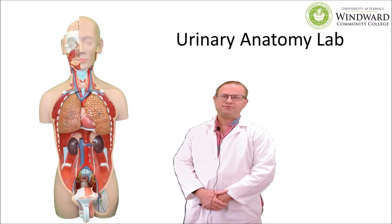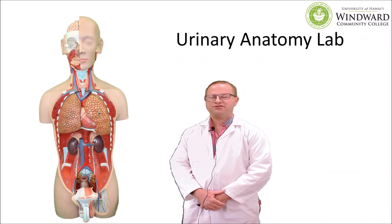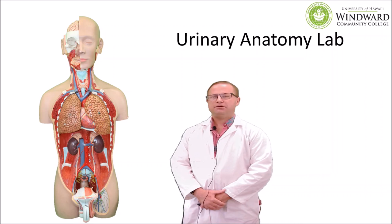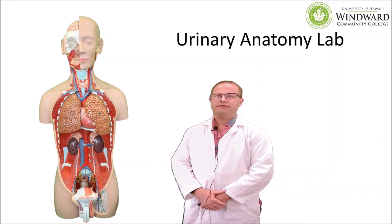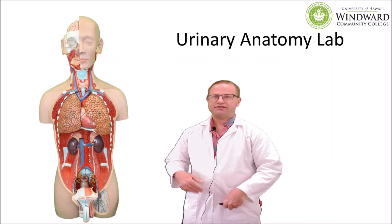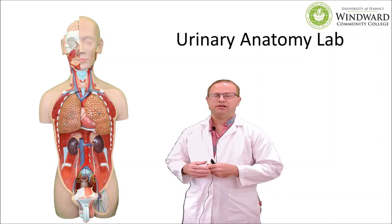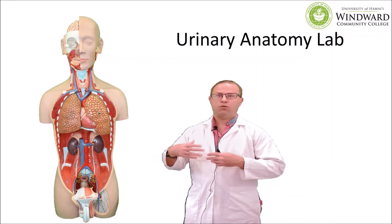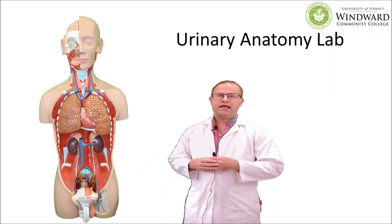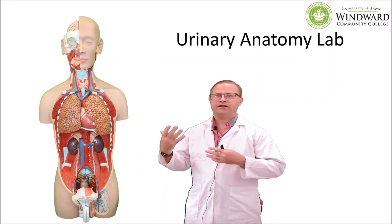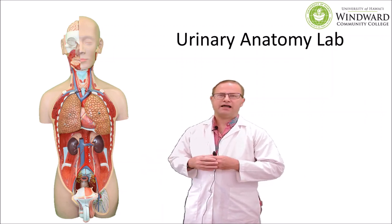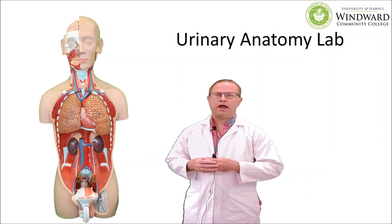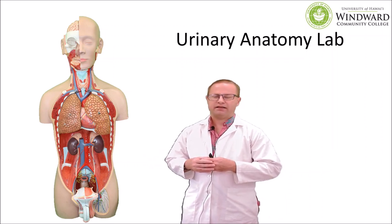Hello anatomy and physiology lab students. Welcome to your second online lab. This lab looks at the anatomy of the urinary system. The urinary system is a very important body system because it helps to cleanse the blood of metabolic byproducts such as urea. It also helps to regulate water balance, and it also regulates the balance of certain electrolytes and ions in the body. Finally, it's also very important for maintaining proper acid-base balance in the body.